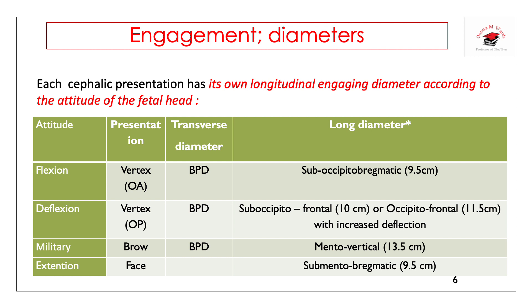Each cephalic presentation has its own longitudinal diameter according to the attitude of the fetus. If the attitude is full flexion, the presentation is vertex or occiput anterior. The transverse diameter is the biparietal diameter, and the longitudinal engaging diameter is the suboccipitobregmatic diameter, which is 9.5 cm. So both transverse and longitudinal diameters are 9.5 cm.